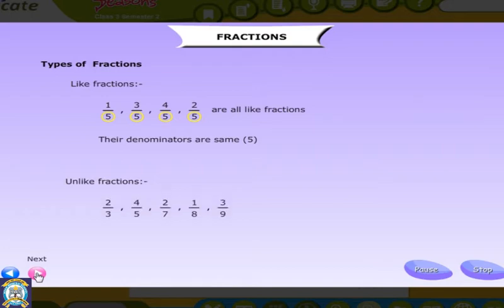Unlike fractions: 2/3, 4/5, 2/7, 1/8, and 3/9 are all unlike fractions. Their denominators are different.